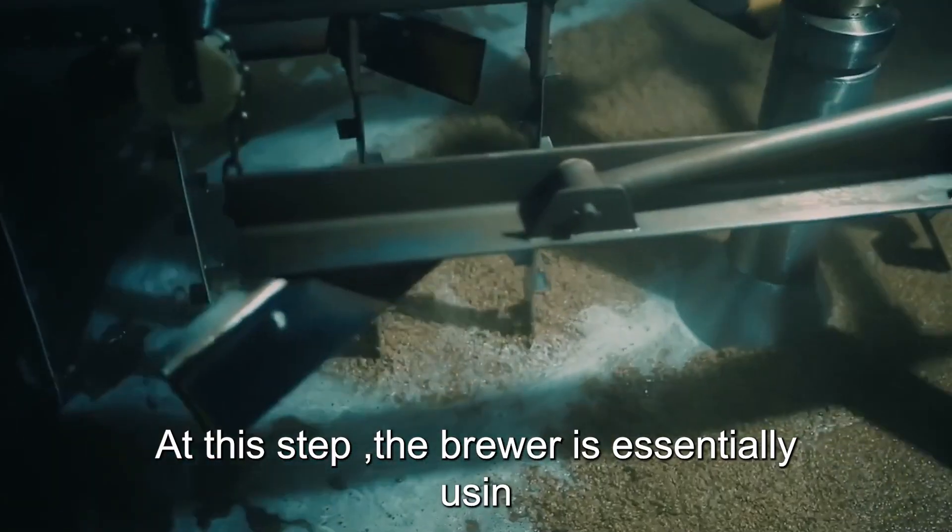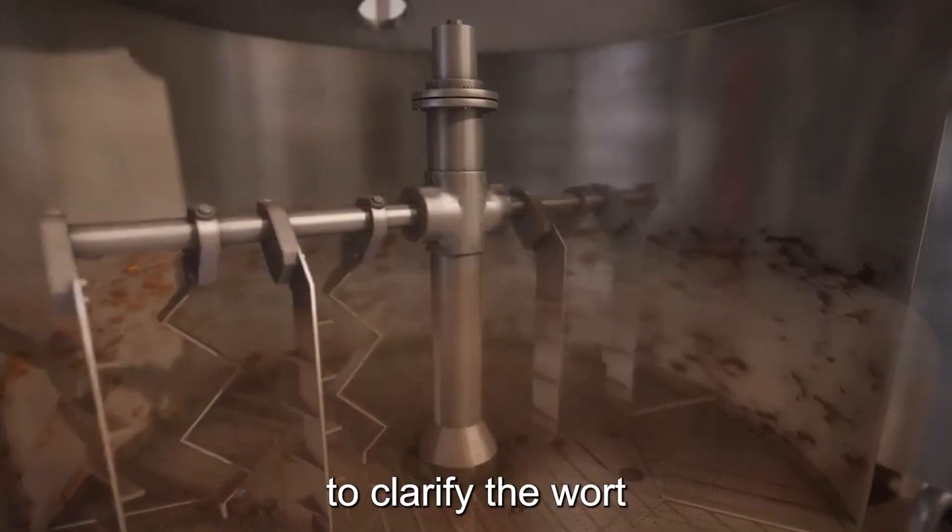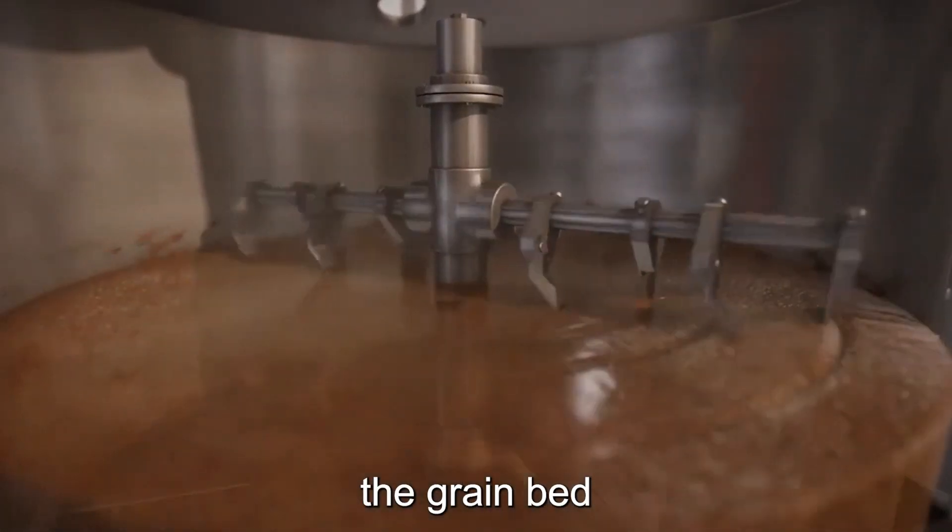At this step, the brewer is essentially using grain present in the mash tun to act as a filter for the wort. The vorlauff serves to clarify the wort and further develop the grain bed.